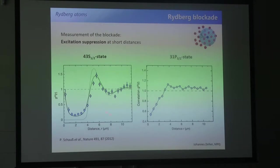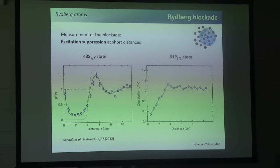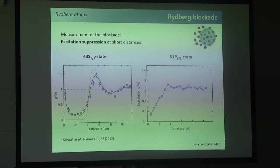Here you see a depression in the g2 where one Rydberg atom blocks other Rydberg atoms. This is for the S state. We can do similar measurements for the P state. The P state has less interaction energy, so smaller blockade, and blockade is also not quite as good. We still don't know exactly why, but we think it's experimental imperfections. This is just a demonstration that blockade exists.